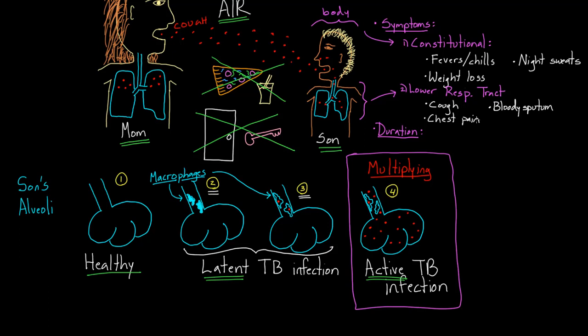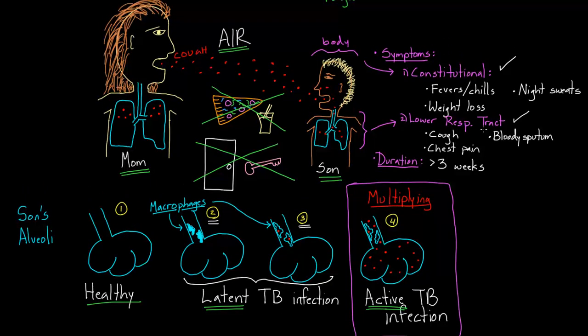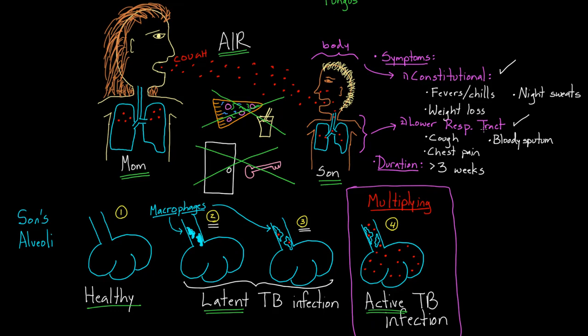And so I always think in my head, okay, are they having constitutional symptoms? If so, I put a check there. Are they having some lower respiratory tract symptoms? If so, I put a check there. And then how long is it going for? And usually with things like active TB infection, I'm thinking it's got to be usually more than three weeks. So more than three weeks. And this is, again, focusing on TB of the lungs or the pleura, which is the space around the lungs. Generally, the symptoms have gone on for a little while. So these then become very helpful clues to figuring out if someone actually has active TB infection.